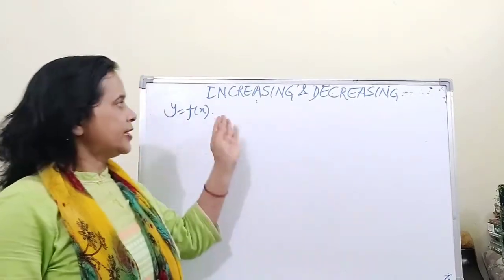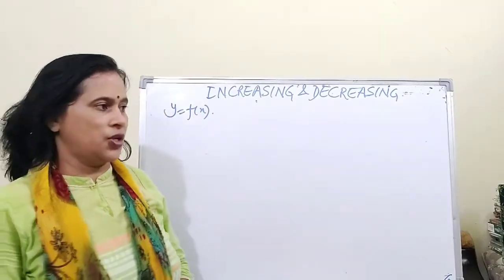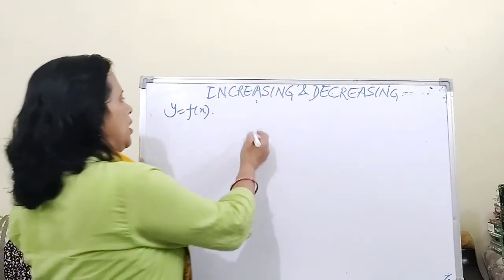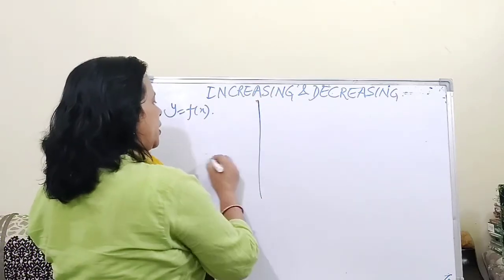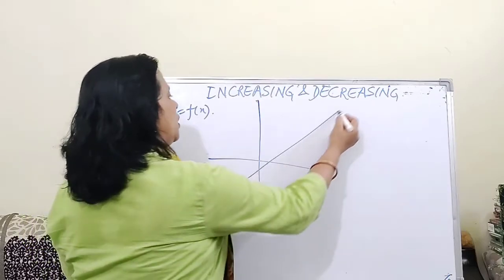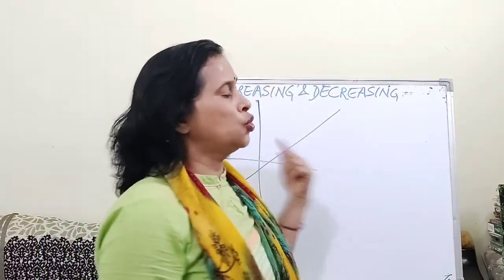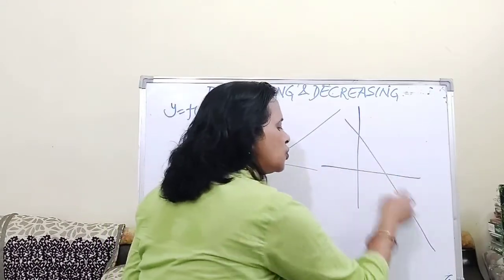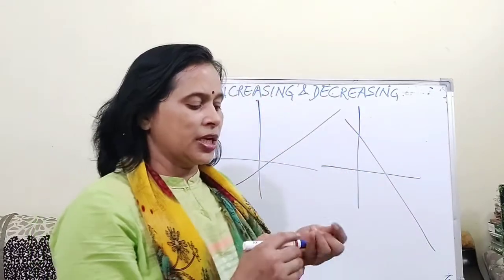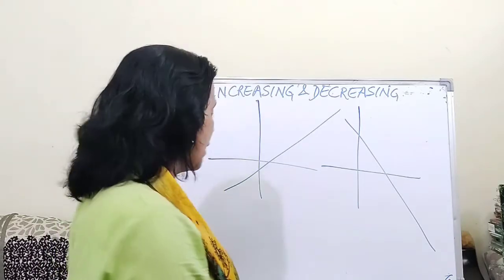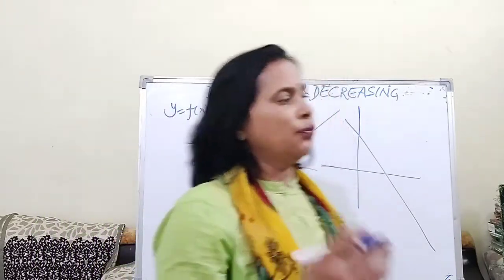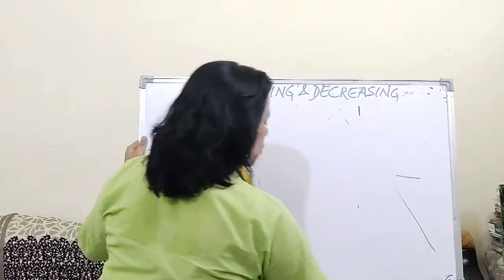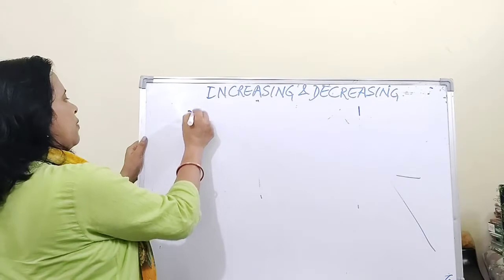Hello dear students, let us start with increasing and decreasing functions. If y = f(x) is any function, suppose I draw its curve — if it goes on increasing, this is called increasing. And suppose when I draw it and it comes down and down, that is called decreasing.